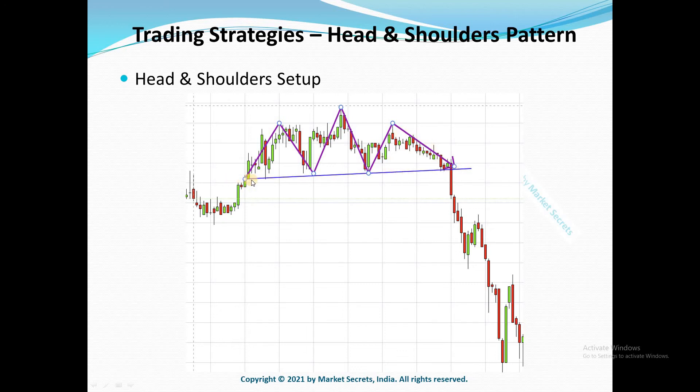The fourth part of the head and shoulders pattern is your trend line or the neck line. This is the last line of defense for the buyers. If price breaks below this neck line or the trend line, the market could reverse and head lower, and this will be the beginning of a new downtrend.